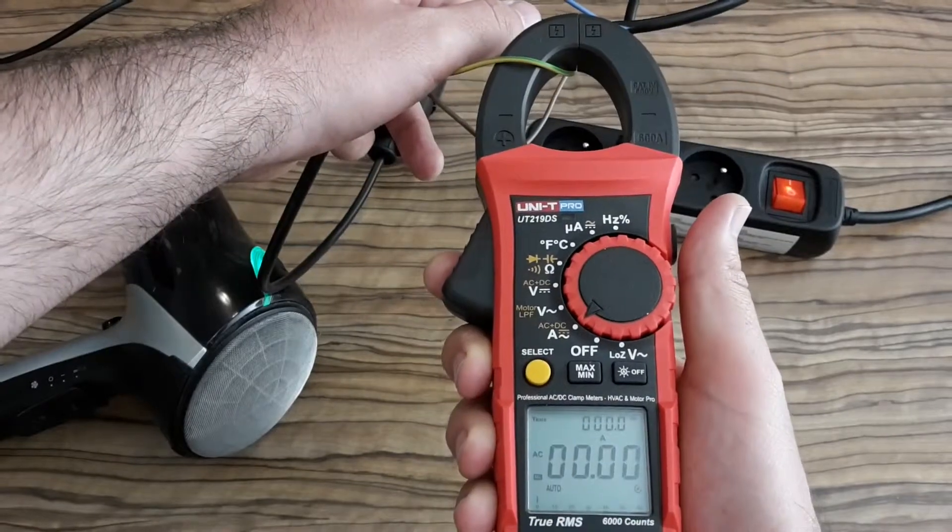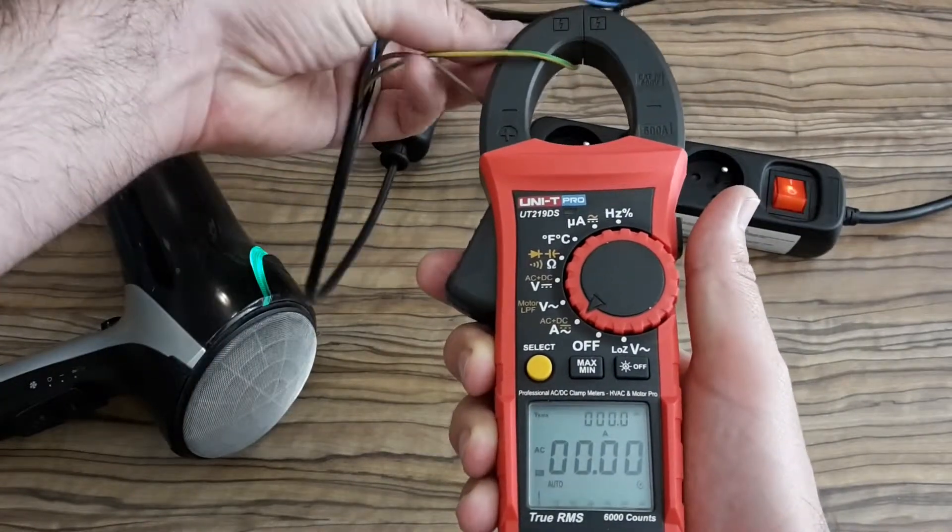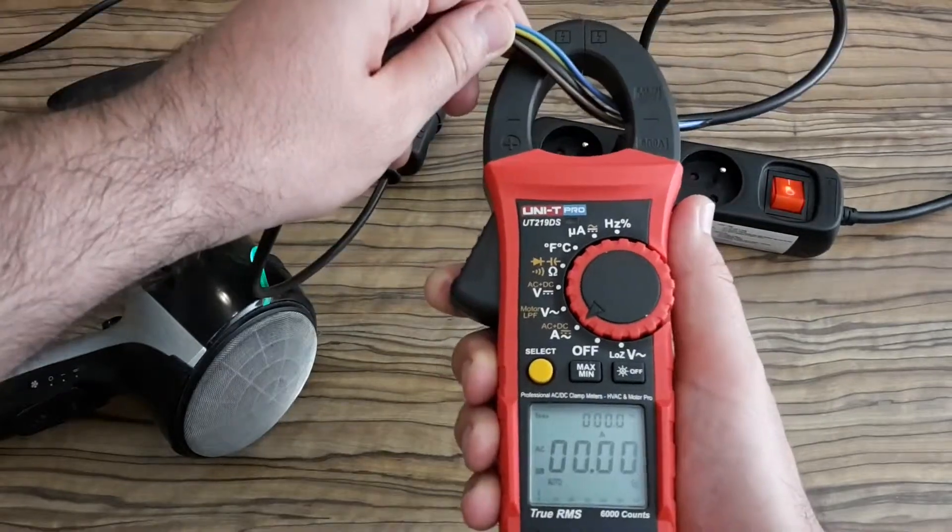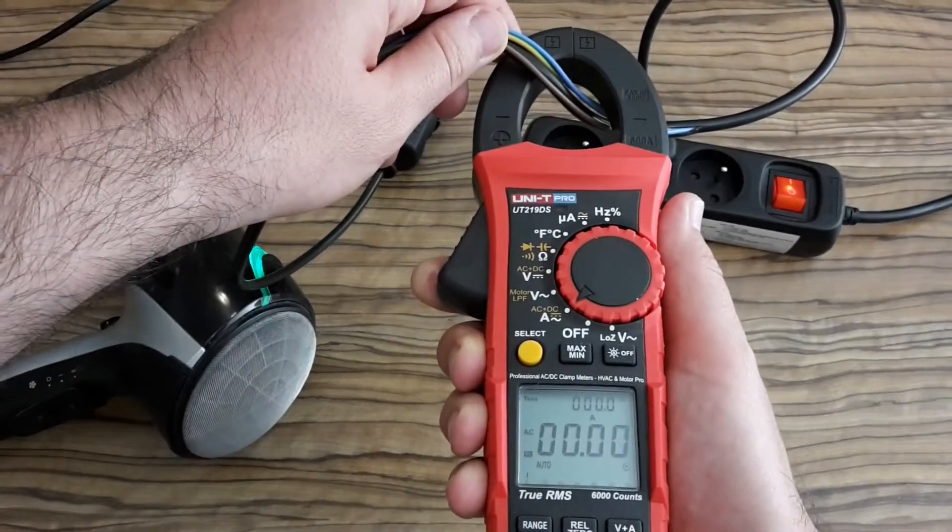The current on the protective ground wire should be always zero. And of course zero if you measure current on all wires at the same time.